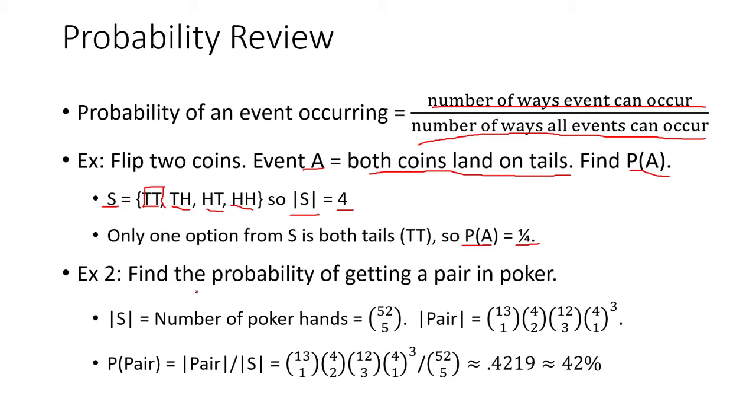So another example using the values we computed previously, we can find the probability of getting a pair in poker. We're going to let the cardinality of S be the number of poker hands possible. And we computed that to be 52 choose 5. Next, we're going to compute the number of ways we can get a pair. So the probability of getting a pair is going to be the number of ways we can get a pair over the number of possible poker hands. And once we crunch the numbers, we'll see that it comes out to around 42%.